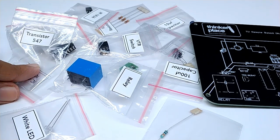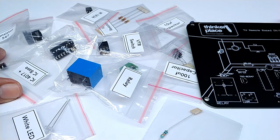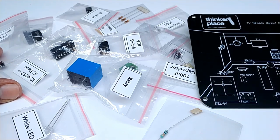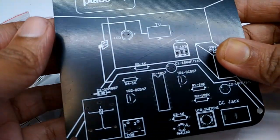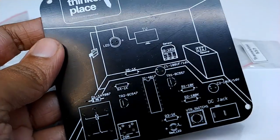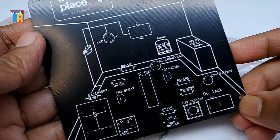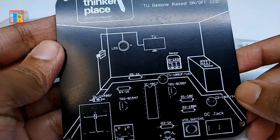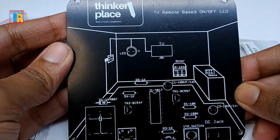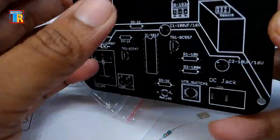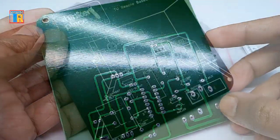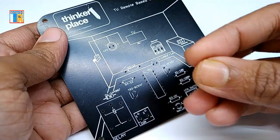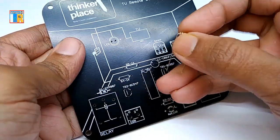Here every component is in different packets and every component value is printed on the packet. On the PCB every component's name and position is printed so it is not difficult for assembling. Except for resistor, every part has polarity so you have to insert them carefully in the proper direction.